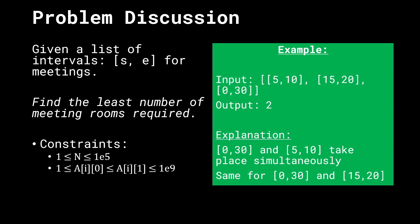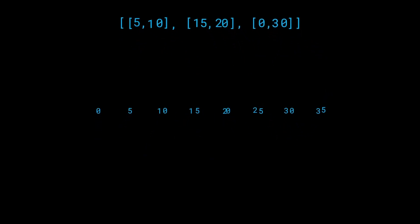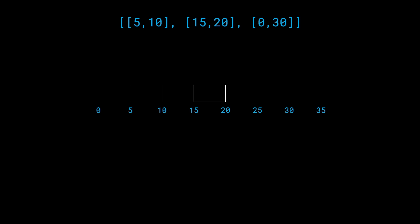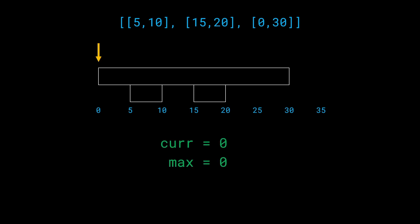Let's expand on this example and simulate how we get to a solution. We have one meeting from 5 to 10, another from 15 to 20, and a third from 0 to 30. What we can do is start scanning from left to right. There's a pointer scanning the meetings, asking: how many meetings are currently going on? The variable `curr` starts from zero, meaning no meetings at time zero. As we scan, we increase `curr` to represent the number of meetings currently going on, and `max` tracks the maximum rooms required.